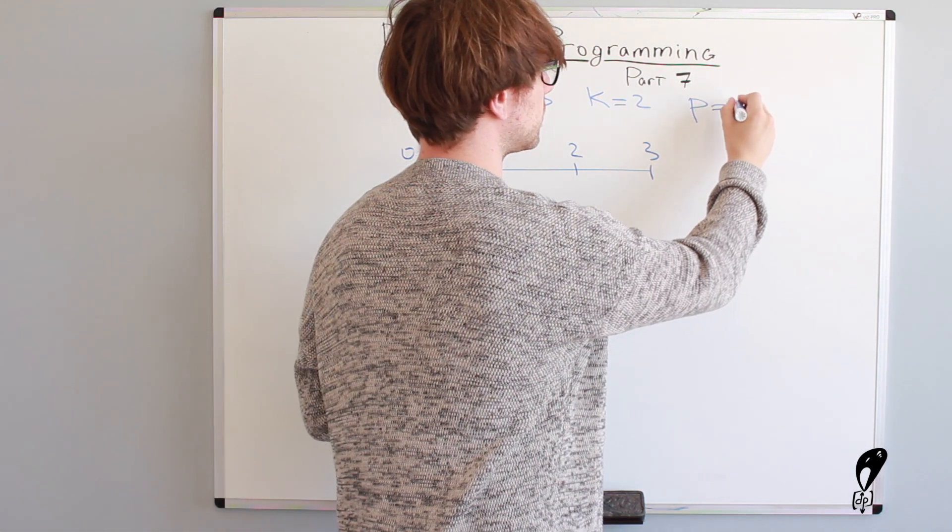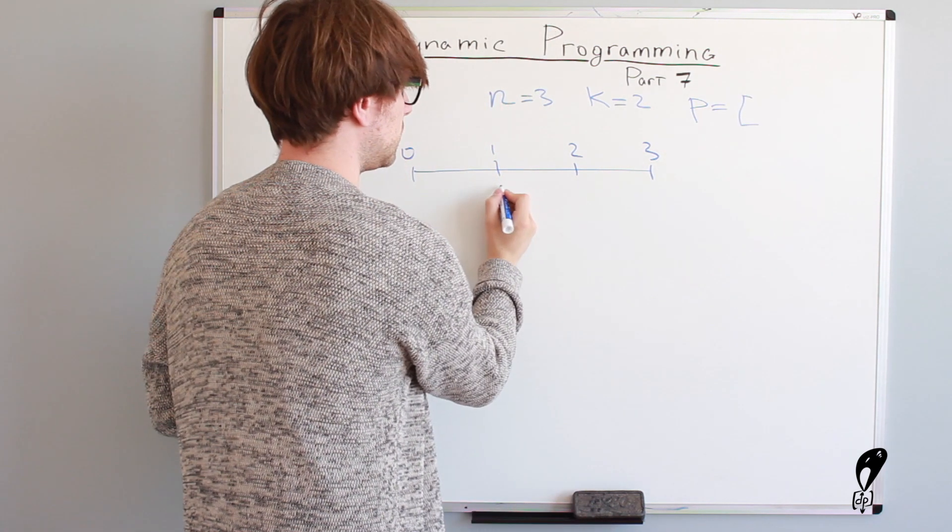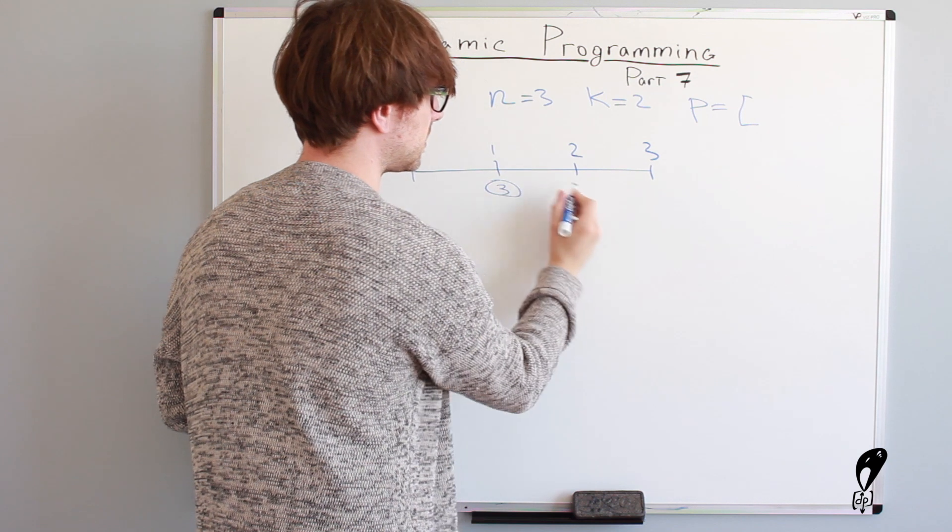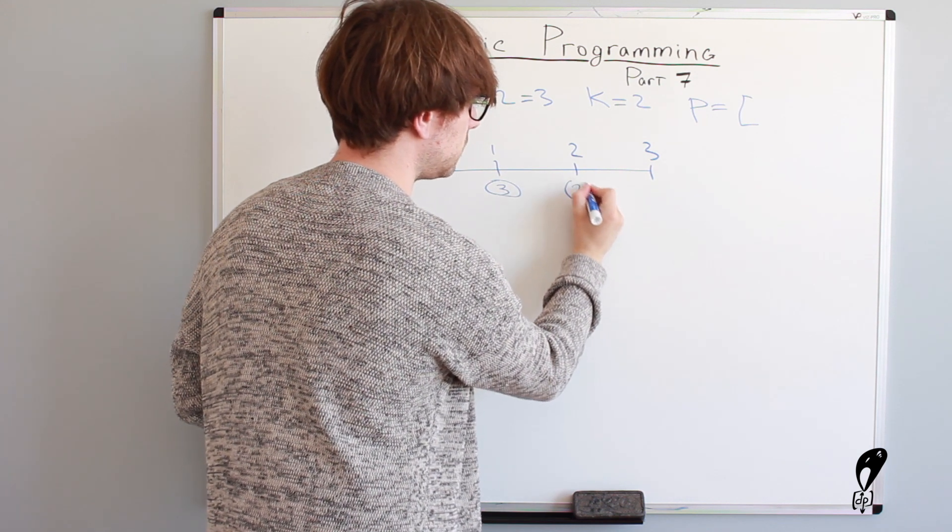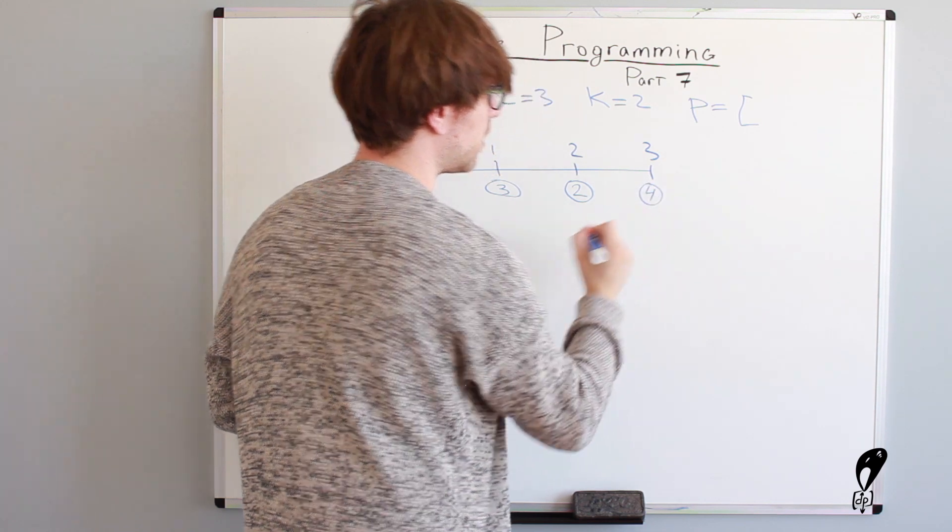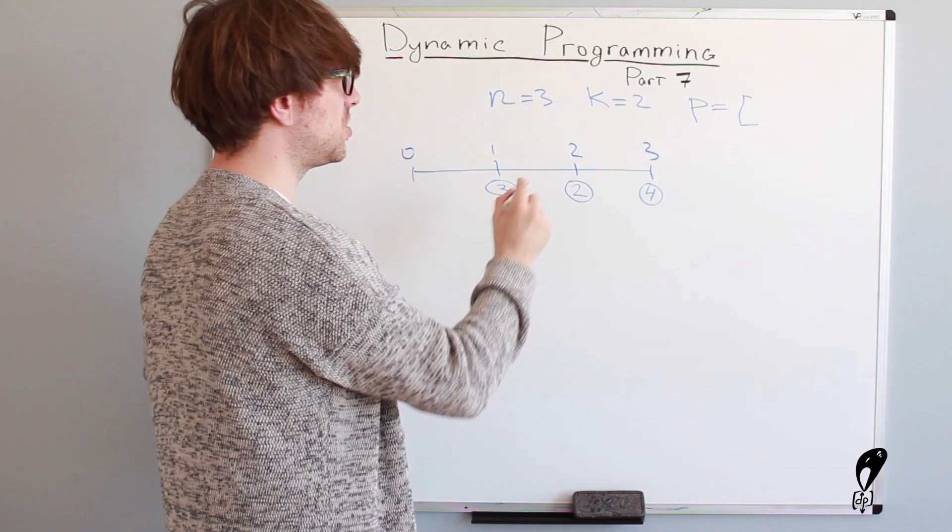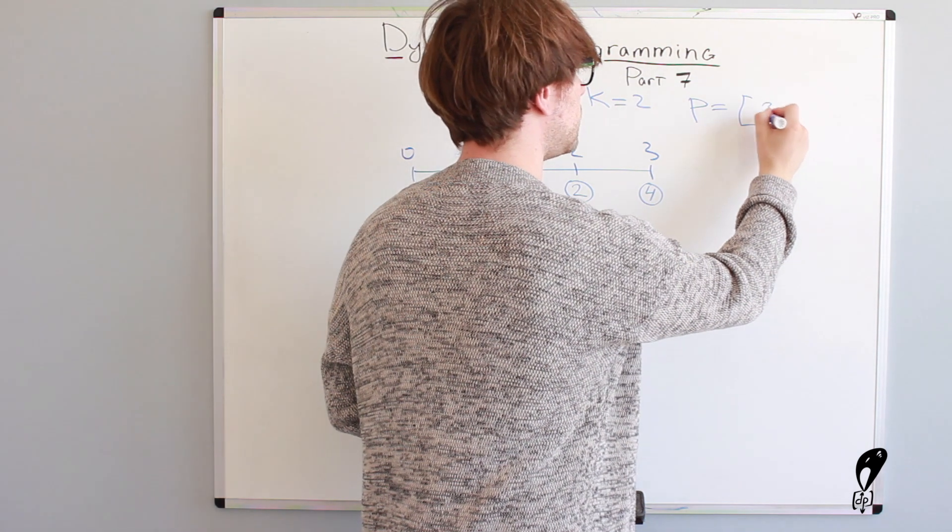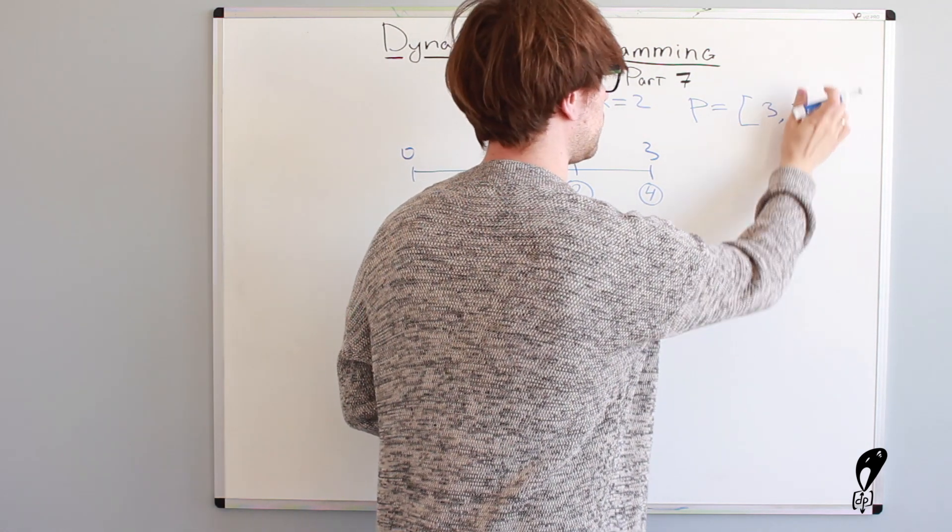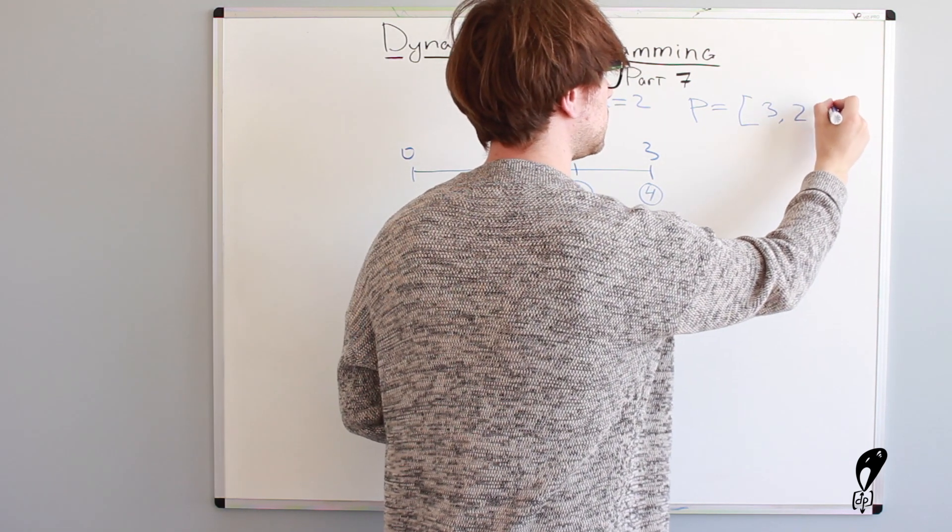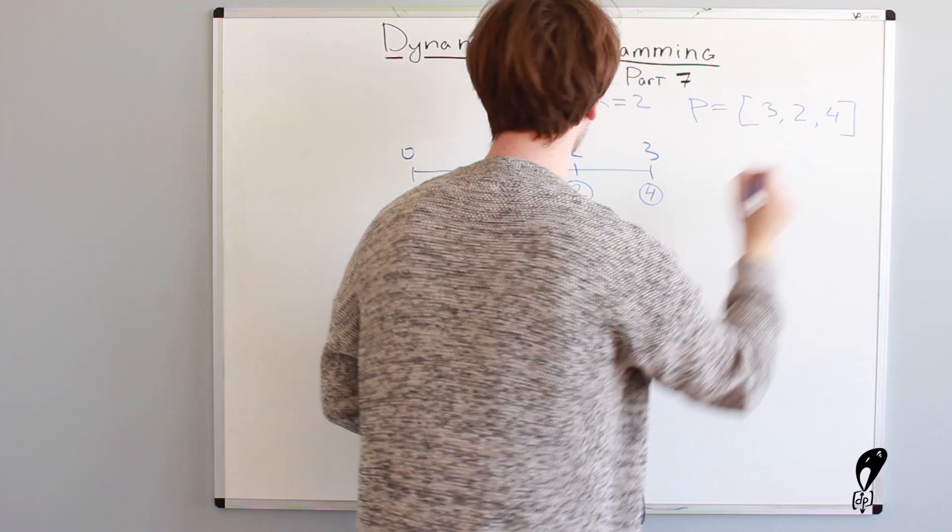And then we also want to introduce price. The price that you have to pay every time you step on a certain stair. So we'll say p equals to let's say to get to the first step costs three dollars. To get to the second step costs two dollars. And to get to the last one is four dollars. And we need to find the cheapest route to get to the top. So it's three, two, and four.